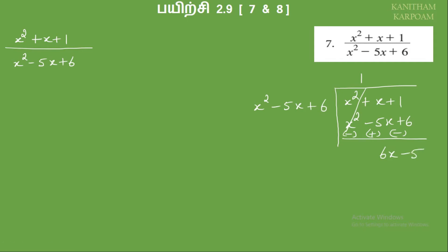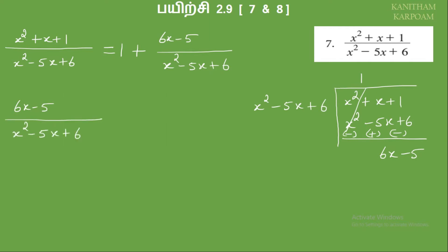Let's see how this is written. So this equals 1. So 1 and on this side plus 6x minus 5. So it is 6x minus 5. So it is 6x minus 5 over x squared minus 5x plus 6. The left side is equal to minus 5x plus 6.